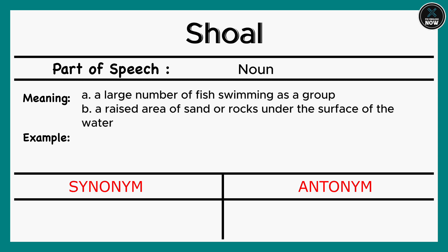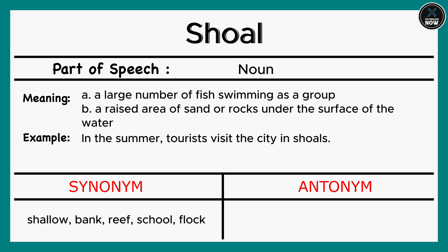Shoal: A. A large number of fish swimming as a group. B. A raised area of sand or rocks under the surface of the water. Example: In the summer, tourists visit the city and shoals. Synonyms: Shallow, Bank, School, Flock. Antonyms: Deep, Bottomless, Abysmal.